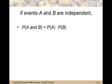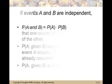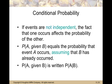So if events A and B are independent, then the probability of A and B is the probability of A times the probability of B.